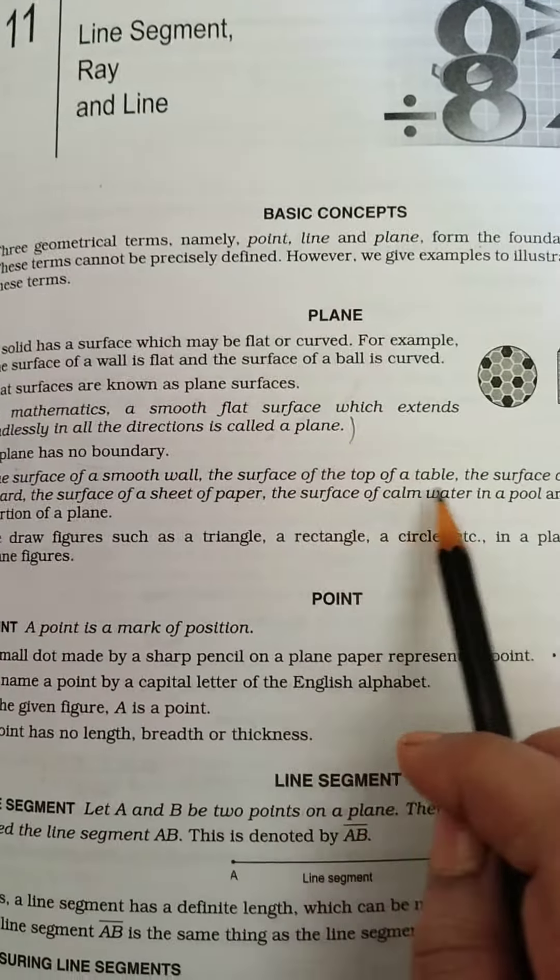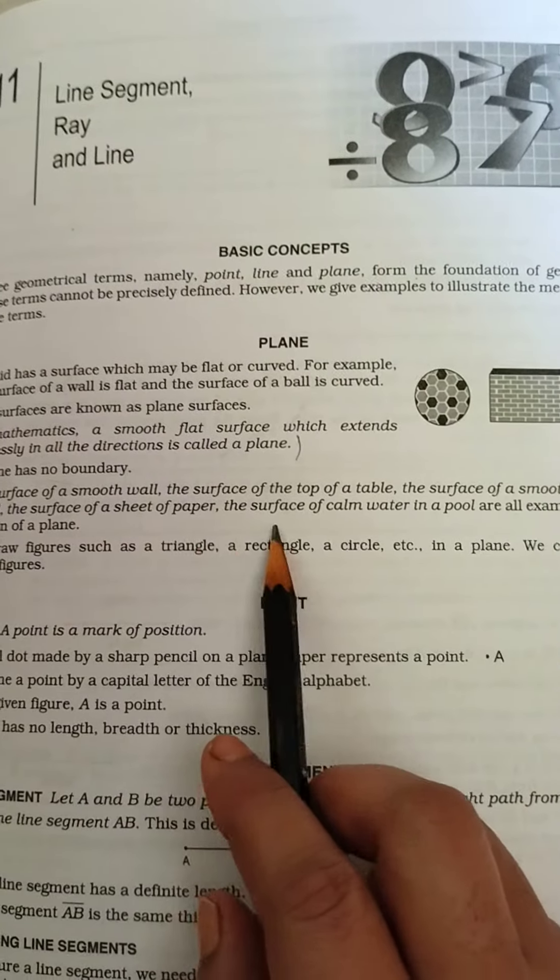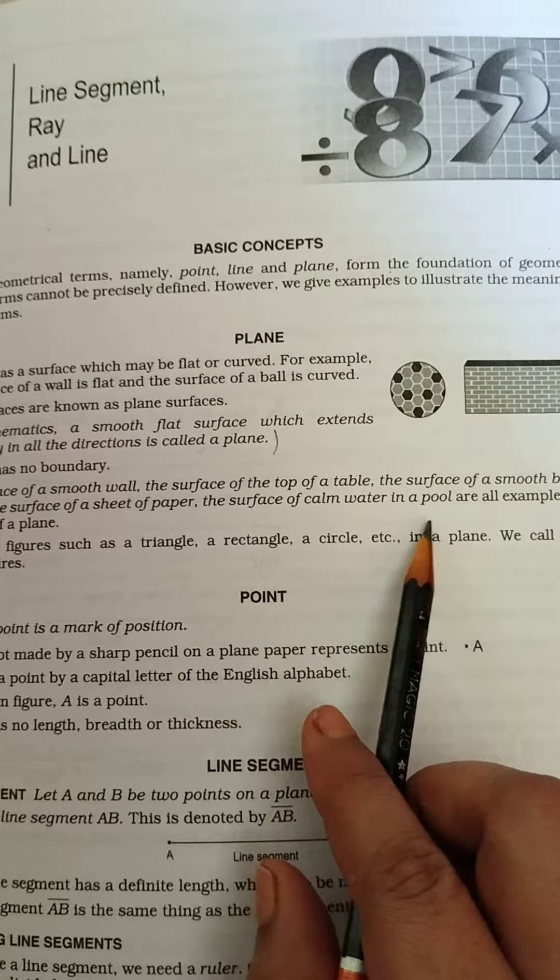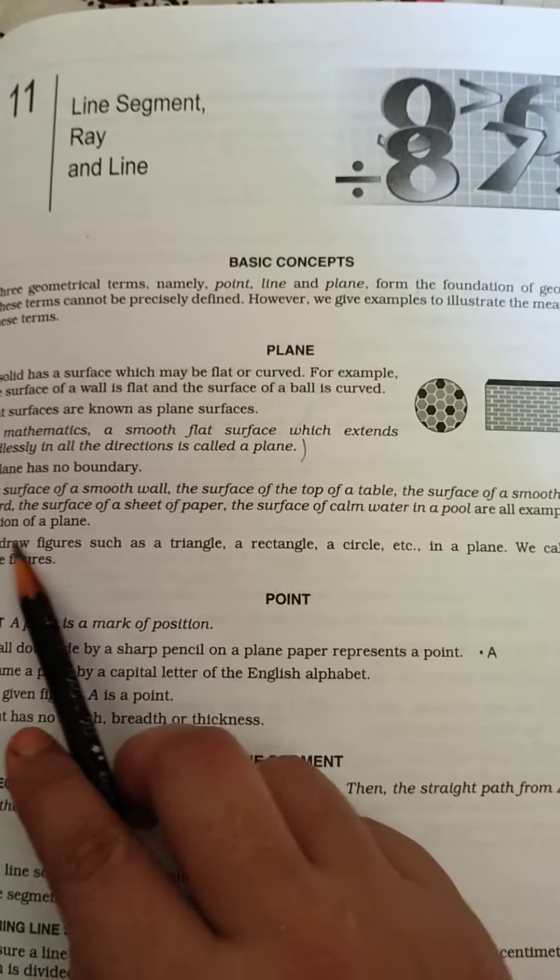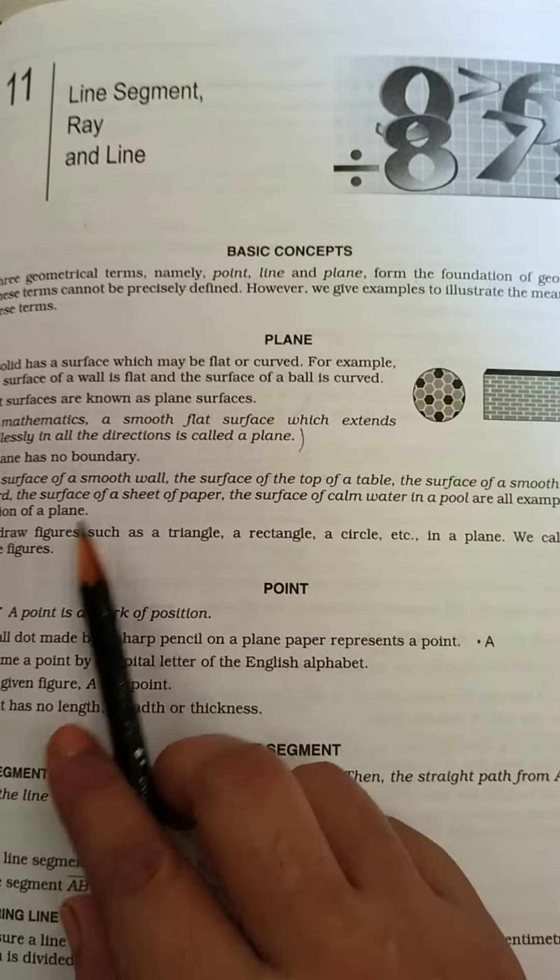The surface of a smooth wall, the surface of the top of a table, the surface of a smooth blackboard, the surface of a sheet of paper, the surface of calm water in a pool—all are examples of the portion of a plane. We draw figures such as a triangle, rectangle, a circle, etc., in a plane. We call them plane figures.